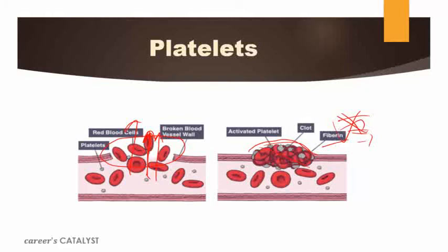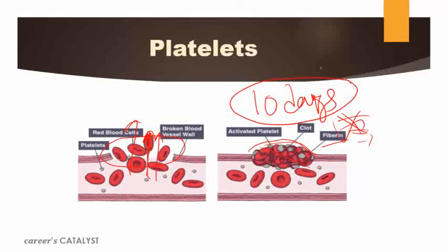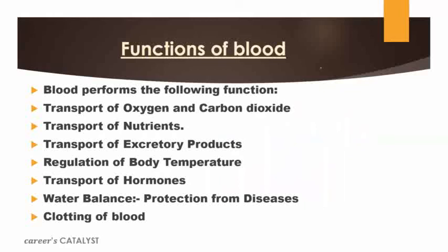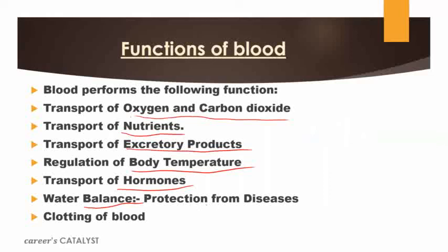The lifespan of platelets is approximately 10 days in our body. Here in this video we discussed about blood and the types of blood cells. In the next video we will talk about the blood vascular system. The functions of blood are: transport of oxygen and carbon dioxide, transport of nutrients, transport of excretory products, regulation of body temperature, transport of hormones, transport of water balance, protection from disease, and clotting of blood. These functions are performed by WBC, RBC, platelets, and plasma in our body.